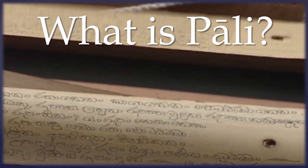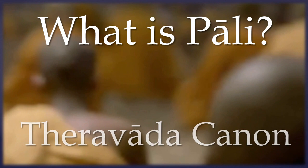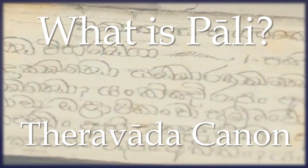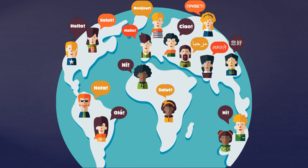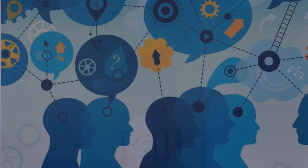The obvious answer, and I'm sure you wouldn't be here if you didn't know, is that Pali is the language in which the scriptures of the Theravada school of Buddhism have been preserved and passed down. That's true, but when we say Pali is a language, most languages are named either after a population or a region. But we have no evidence for a region called Pali, or even a population of Pali speakers.